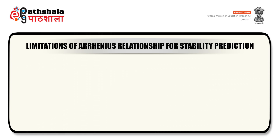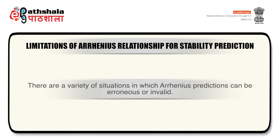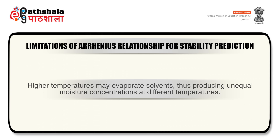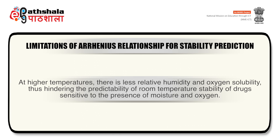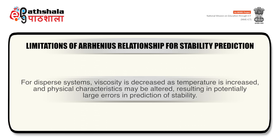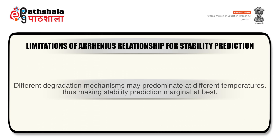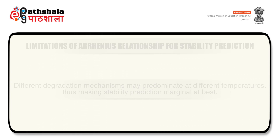Now, limitations of the Arrhenius relationship for stability prediction. There are a variety of situations in which Arrhenius predictions can be erroneous or invalid. Higher temperatures may evaporate solution, thus producing unequal moisture concentration at different temperatures. At higher temperatures there is less relative humidity and oxygen solubility, thus hindering the predictability of room temperature stability of drugs sensitive to the presence of moisture and oxygen. For dispersed systems, viscosity is decreased as temperature is increased and physical characteristics may be altered, resulting in potentially large error in prediction of stability. Different degradation mechanisms may predominate at different temperatures, thus making stability prediction marginal at best.